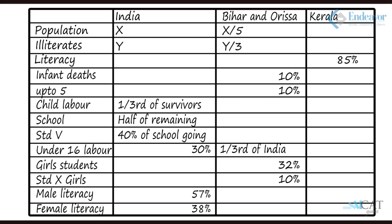Now we've come to the end of the paragraph with a lot of data. We have Orissa/Bihar and India as columns, with Kerala added. The rows include population, illiterates, literacy, infant deaths, up to age 5, child labour, school-going, Standard 5, under-16 labour, girl students enrolled, Standard 10 girls, male literacy, and female literacy. Let's start attacking the questions.